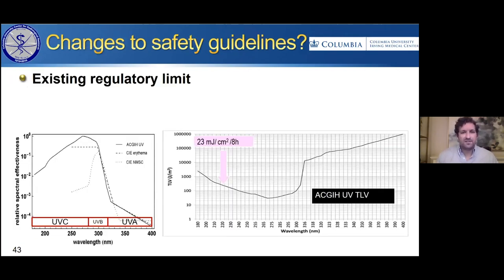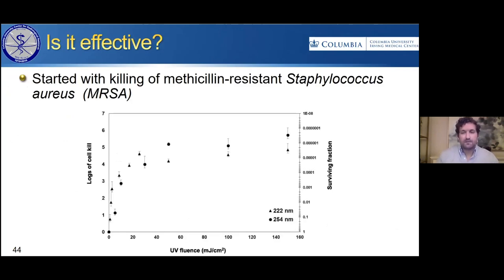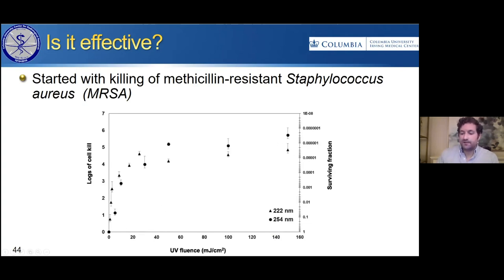Does that mean changes to safety guidelines are in order? Does that mean higher doses might actually be safe? That still needs to be explored — these limits have been established for decades and significant evidence is required to change them. But there's still a lot of room to work within these regulatory limits. We originally started efficacy work looking at methicillin-resistant Staphylococcus aureus (MRSA), an antibiotic-resistant bacteria common in hospital-acquired infections. We compared 254 nanometer light with 222 nanometer far UVC light and found about the same efficacy in killing — which is really good news.